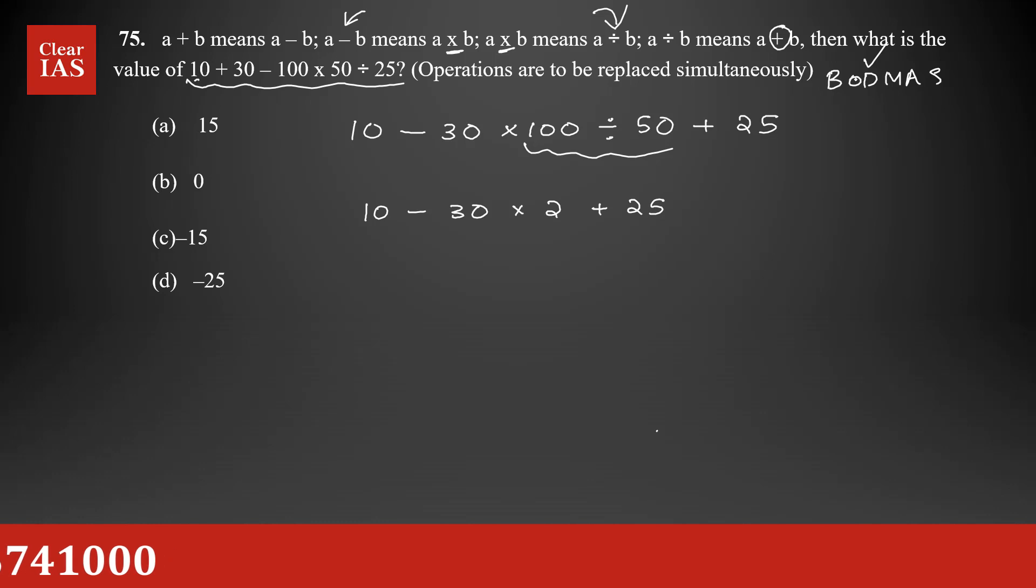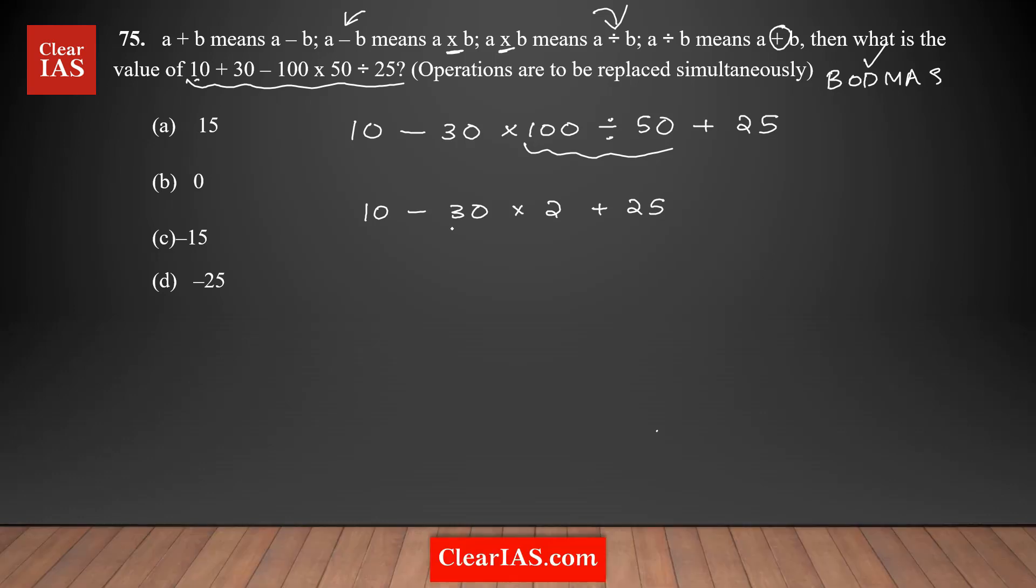After that, next operation we're going to do is multiplication. 30 times 2 is 60, so you have 10 minus 60 plus 25.